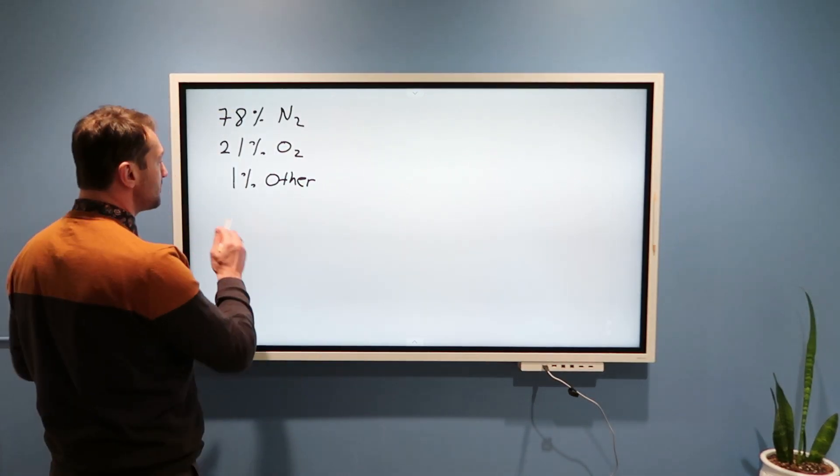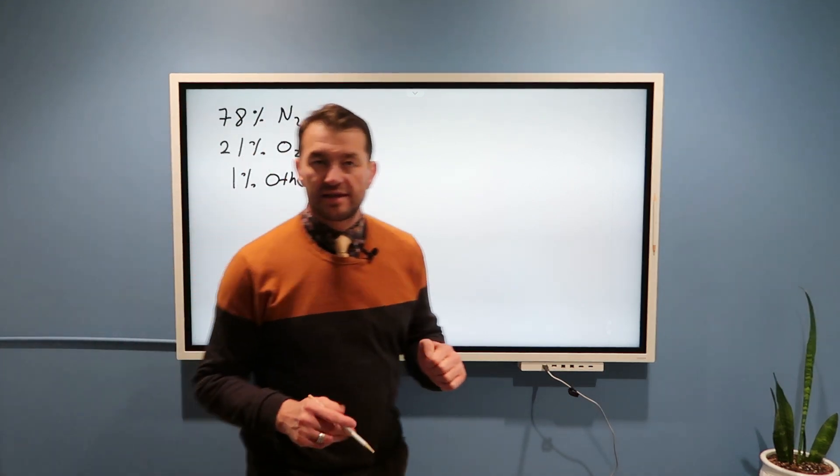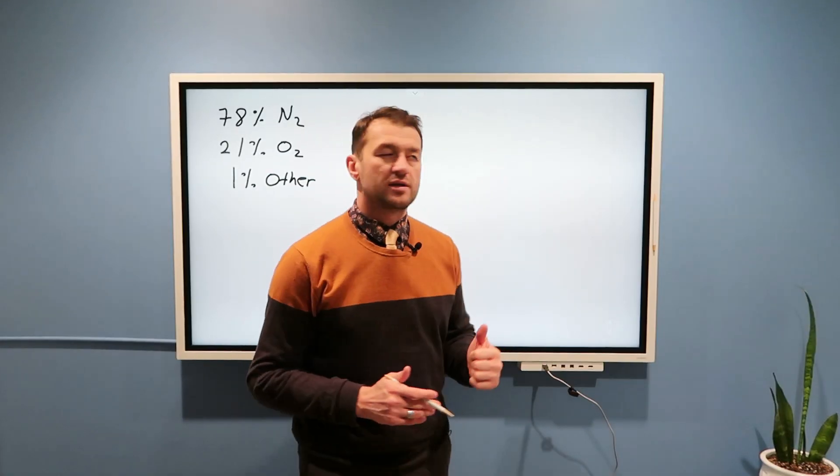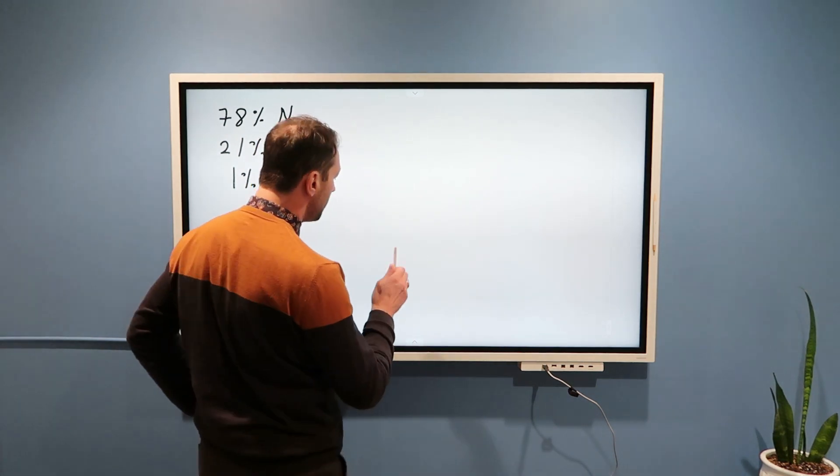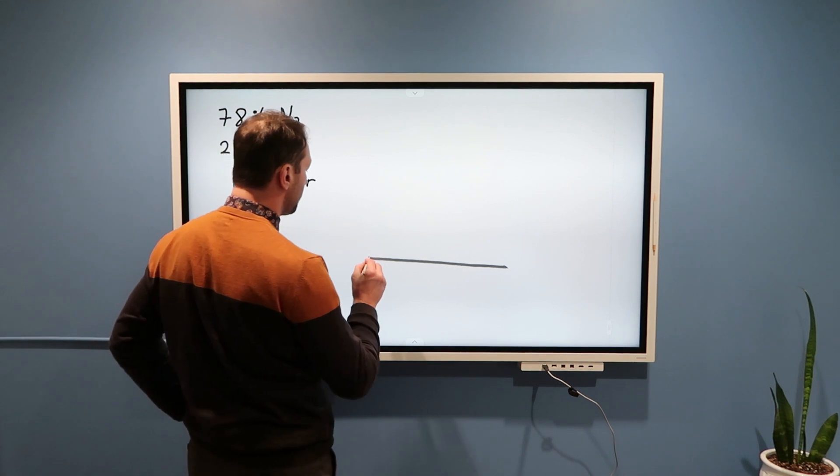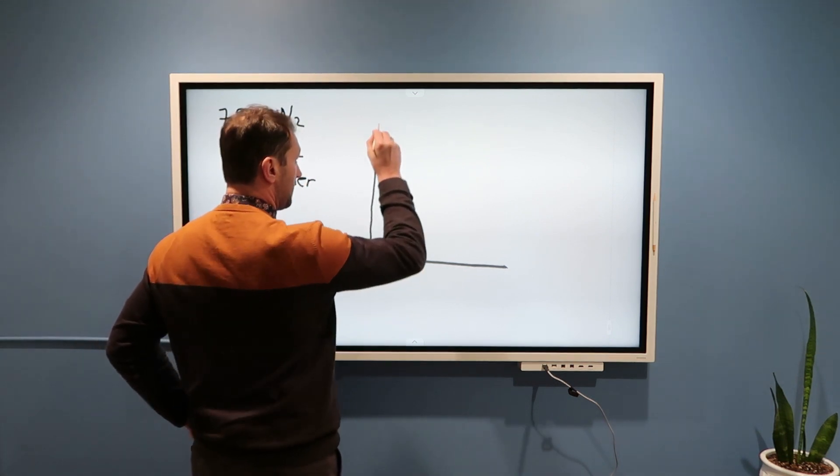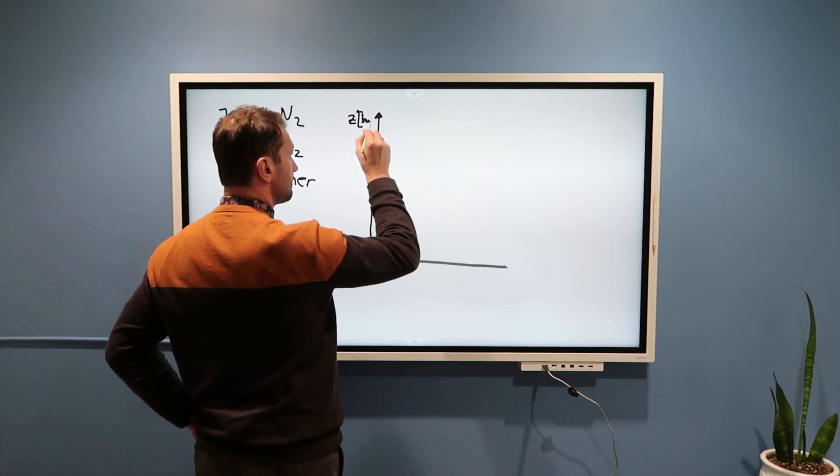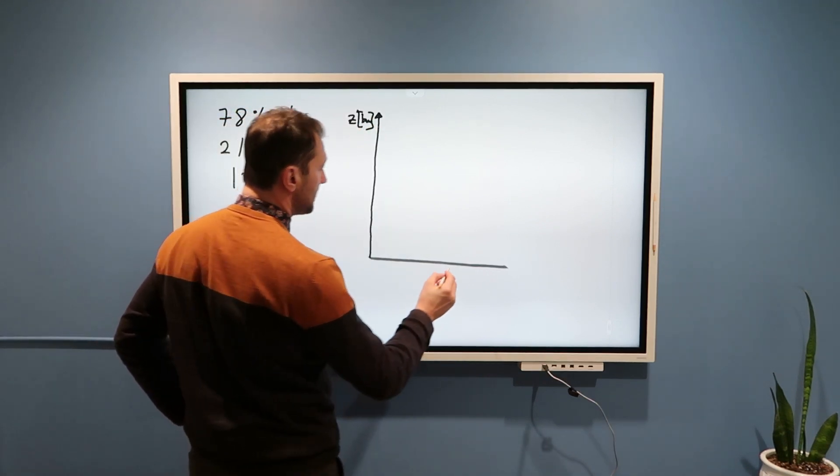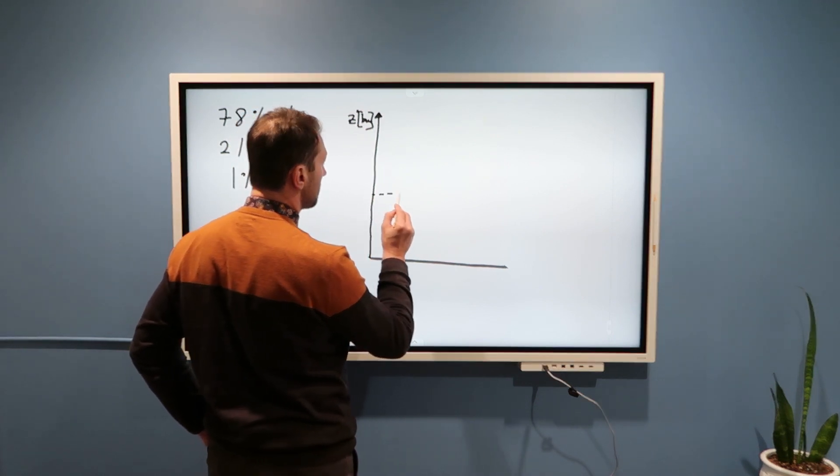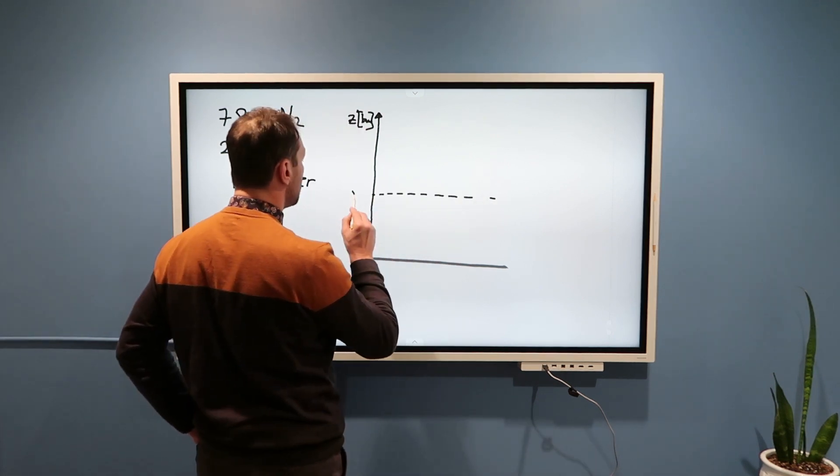But this is really only the case in the first approximately 80 to 100 kilometers. Namely, if this is the surface of the Earth, and here the vertical axis is height in kilometers...